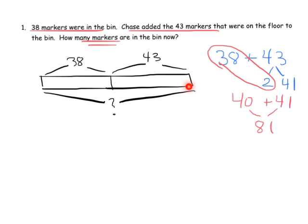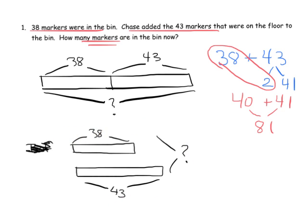There is no way this is the only tape diagram students could have drawn. They could also draw it showing 38 on one bar and 43 on a second bar below, with labels 'bin' and 'floor,' and the question mark off to the side. If a student draws the tape diagram that looks like this, that's absolutely fine. In either case, the tape diagram is an accurate representation of the problem.